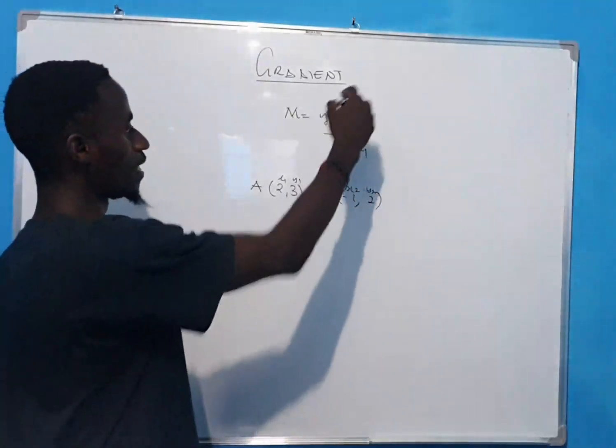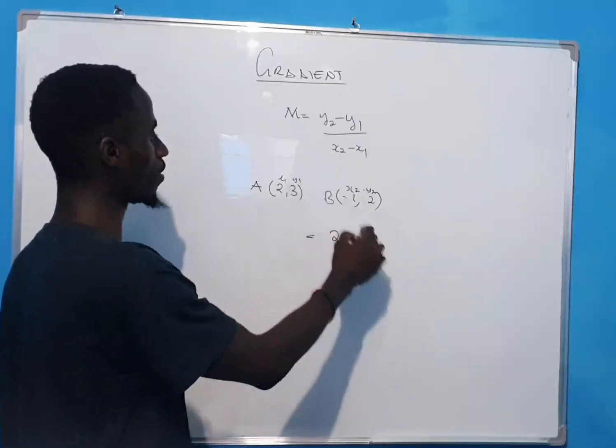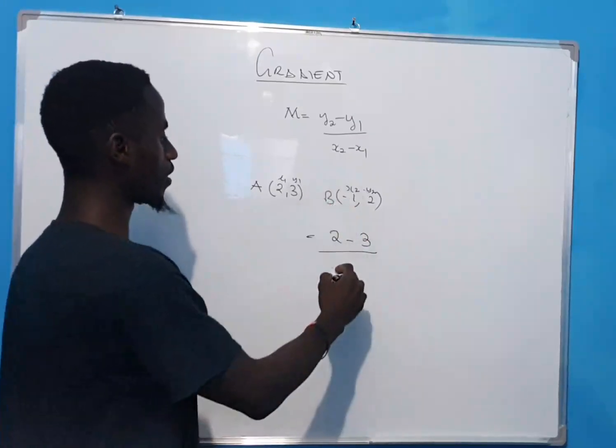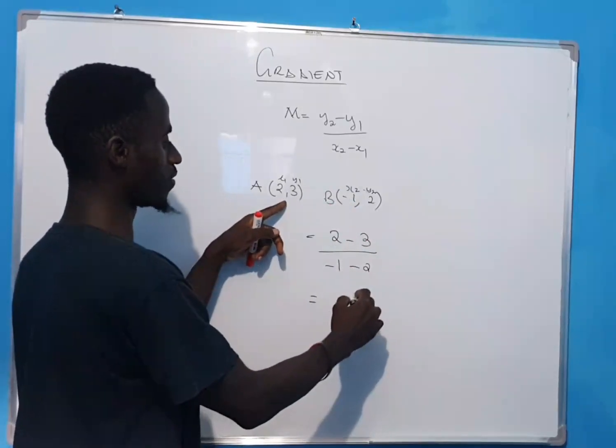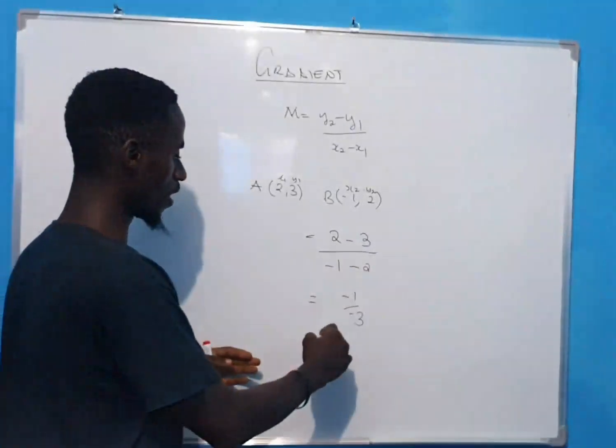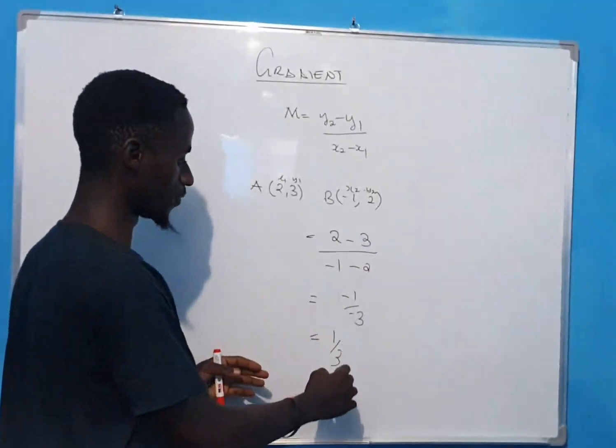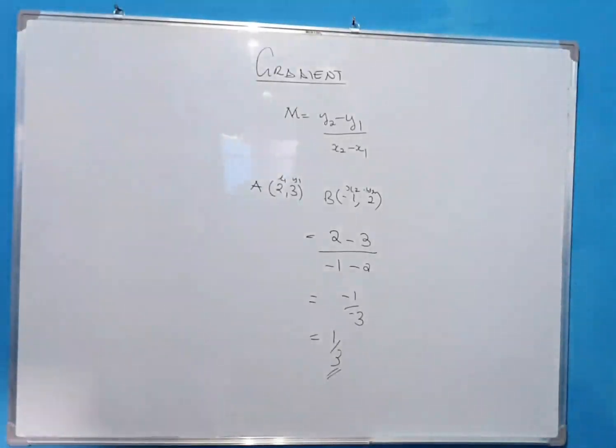So you just need to plug in there. y2 is 2 minus y1 is 3. x2 is -1 minus 2. And this one will be -1 over -3. And this will give you 1 over 3.